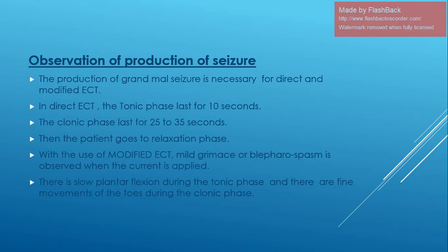The production of a grand mal seizure is necessary for both direct and modified ECT. In direct ECT, the tonic phase lasts for 10 seconds and the clonic phase lasts for 25 to 35 seconds, then the patient goes into a recession phase. With modified ECT, a mild tremor or blepharospasm is observed when the current is applied. There is slow plantar flexion during the tonic phase and fine movements of toes during the clonic phase.